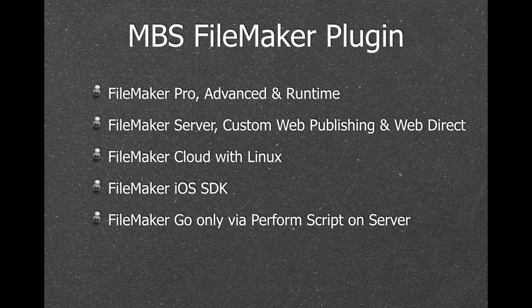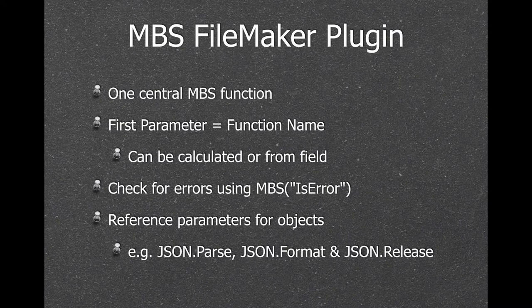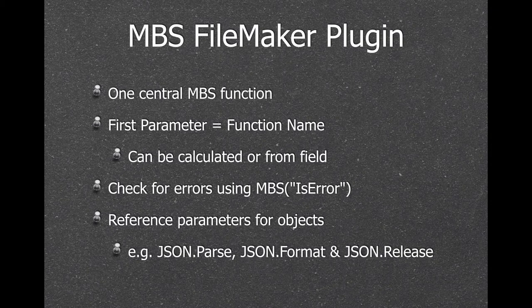With FileMaker Go you can use the plugin using perform script after you installed it on the server. The MBS plugin doesn't add 5000 functions to the calculation dialog — we just add one function. The MBS function takes the first parameter as the actual function name, which can be calculated at runtime or picked from a field. Each function may return an error message, and the best way to check for an error is to use the MBS isError function. A lot of functions use objects with reference numbers — for example, json.parse will return an ID for the JSON object in memory so you can pass this ID to a json format function and later release the object with json release function.